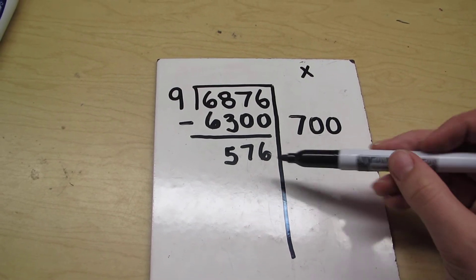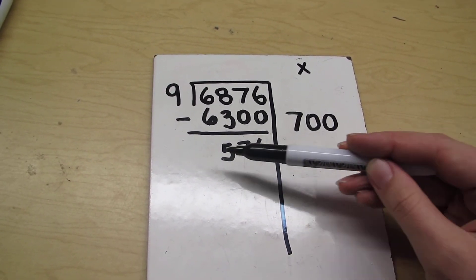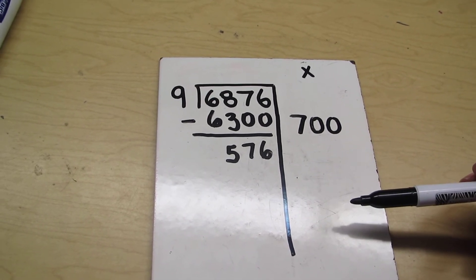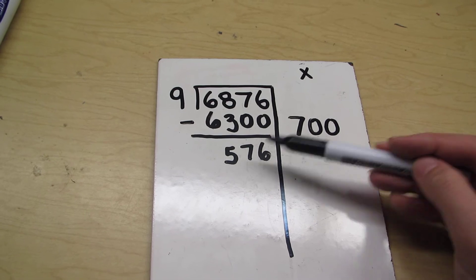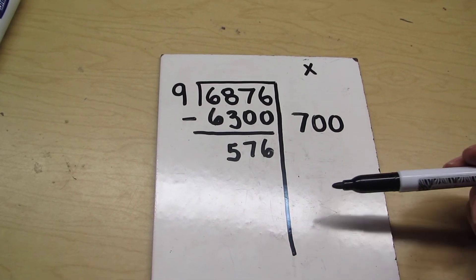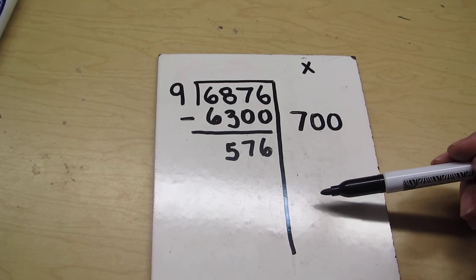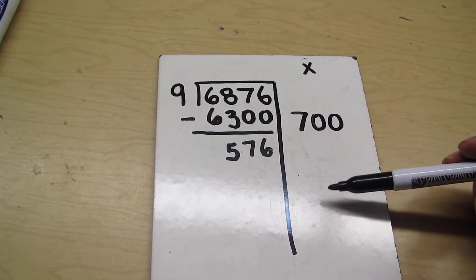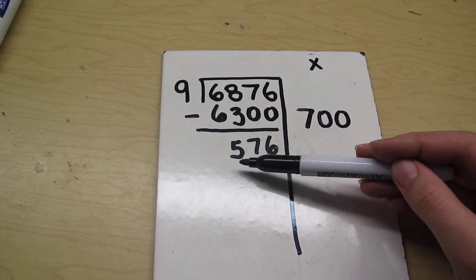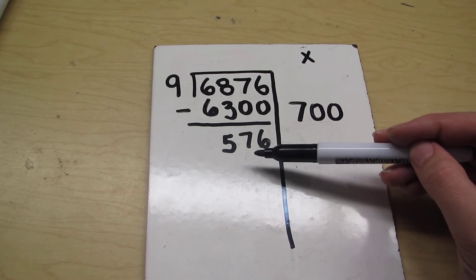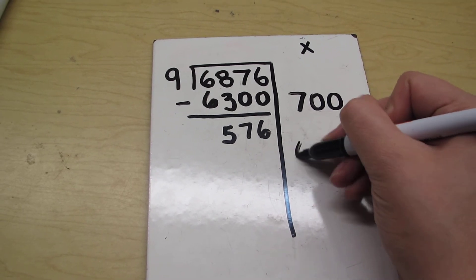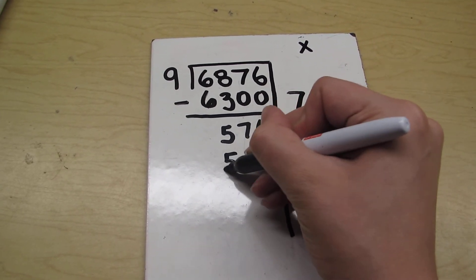So I want to figure out 9 times something is going to give me a number that's close to 576. Let's see. Well, I know that 9 times 5 is 45, and I know that 9 times 6 is 54. That's even closer than 45. I have 57 over here. So here I go. I'm going to do 9 times 6 is 54.